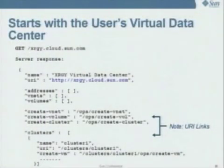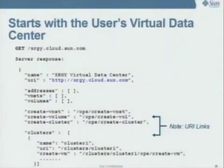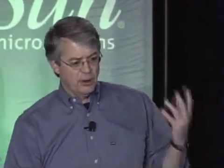It starts with the user's virtual data center. A simple GET to the virtual data center for the individual customer will return a representation from the server showing the name of the VDC itself and the URI. This is the beginning of a virtual data center — it has essentially no addresses, no virtual networks, and no volumes. But most importantly, it has these URI links. This is how you create resources using REST within this virtual data center — for example, create vnet and other properties.